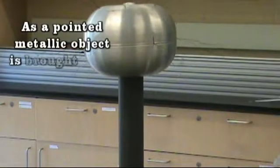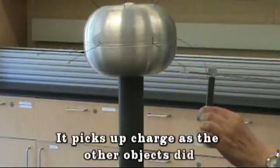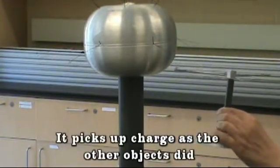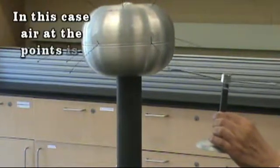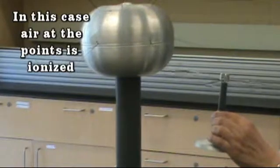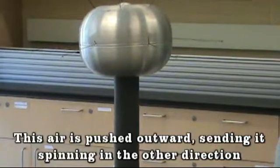As a pointed metallic object is brought close, it picks up charge as the other objects did. In this case, air at the points is ionized. This air is pushed outward, sending it spinning in the other direction.